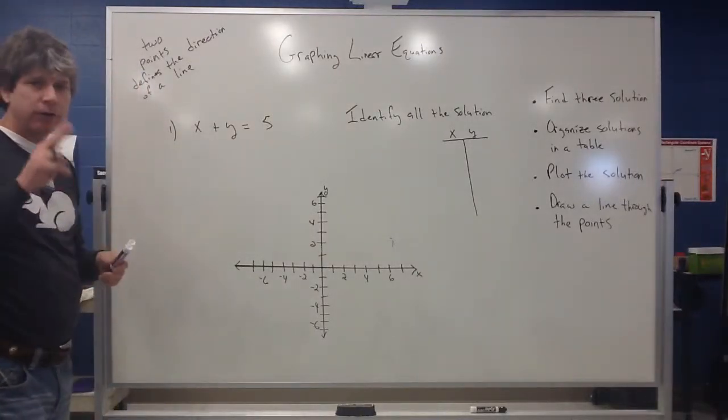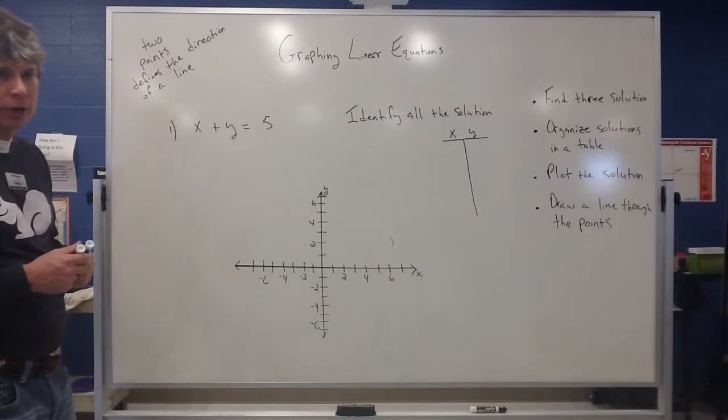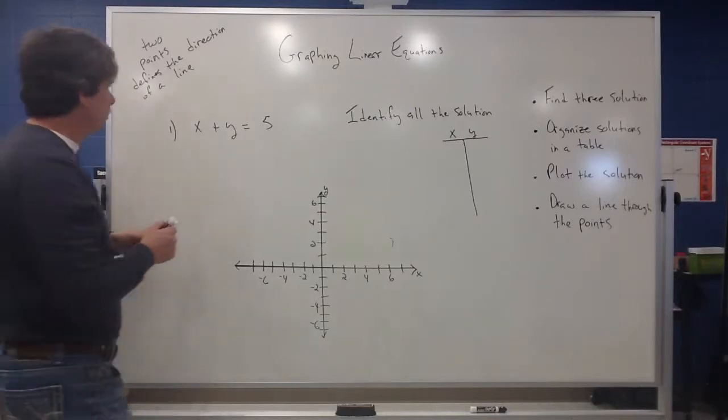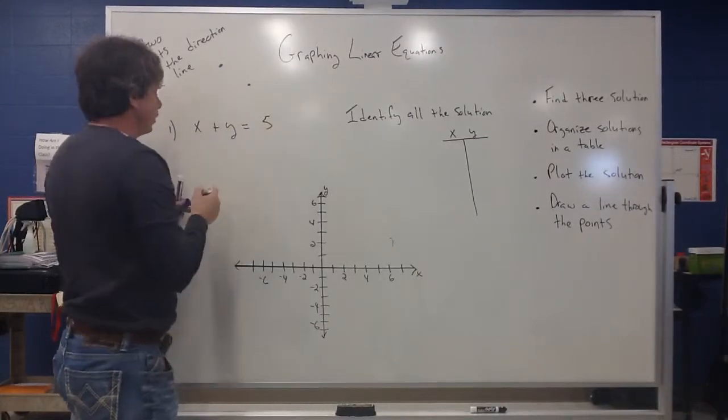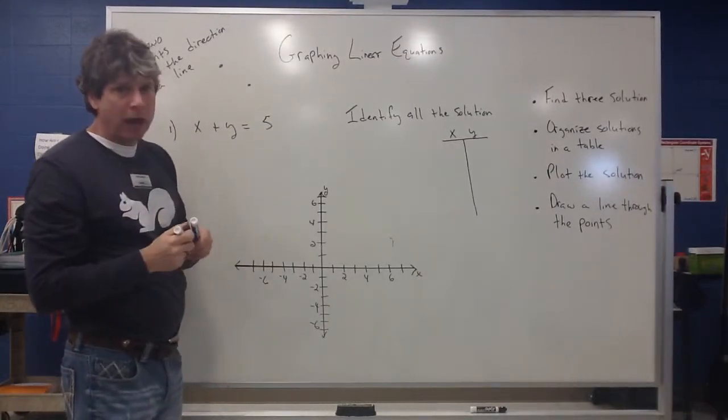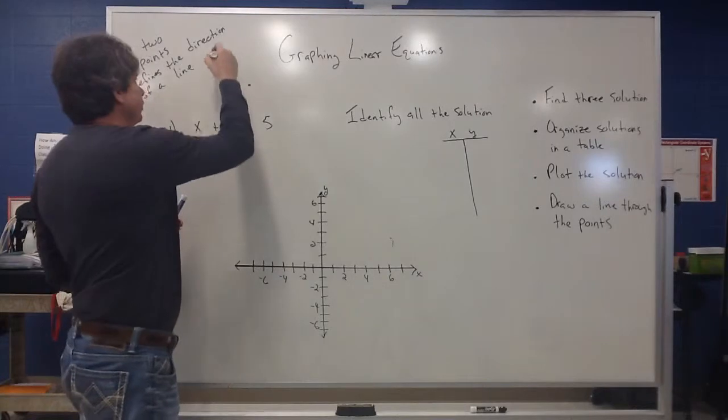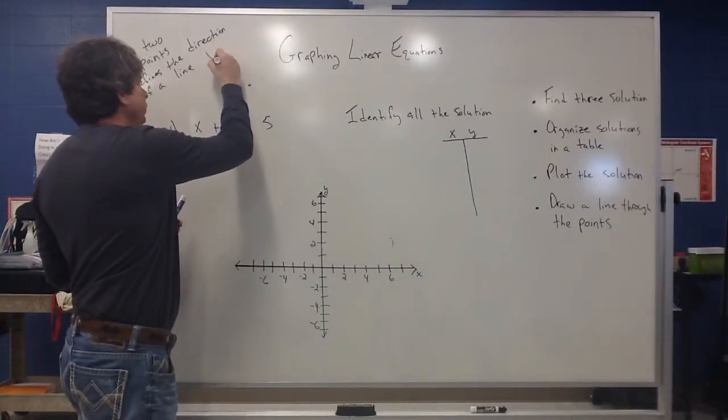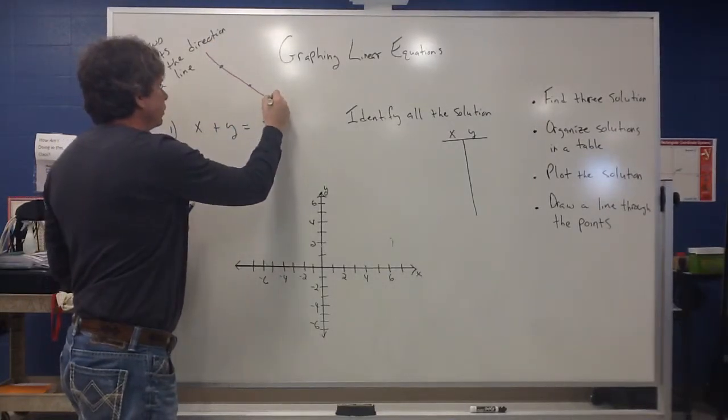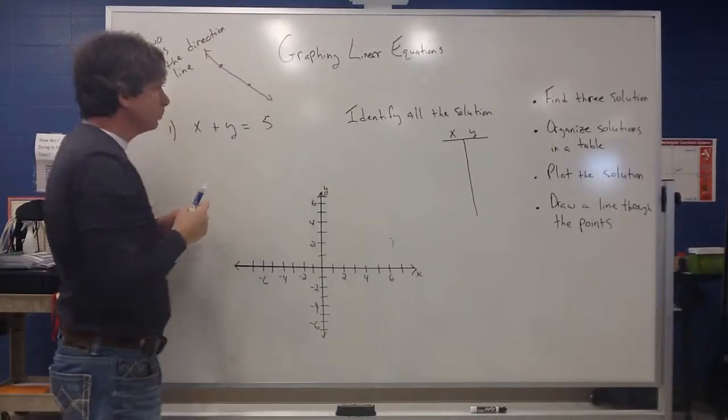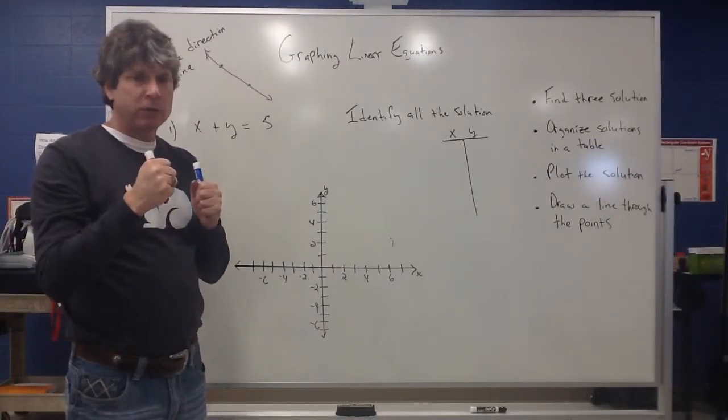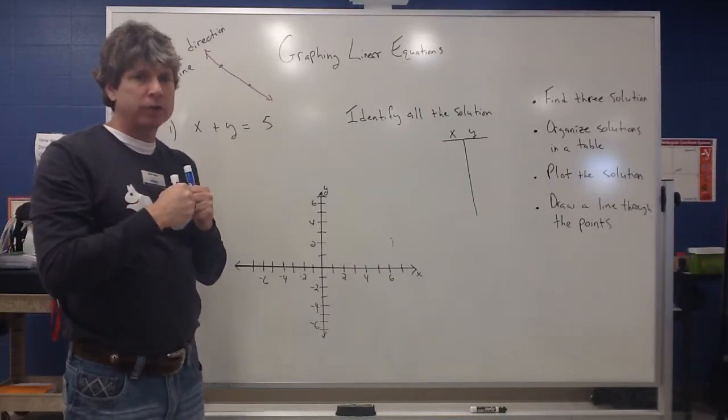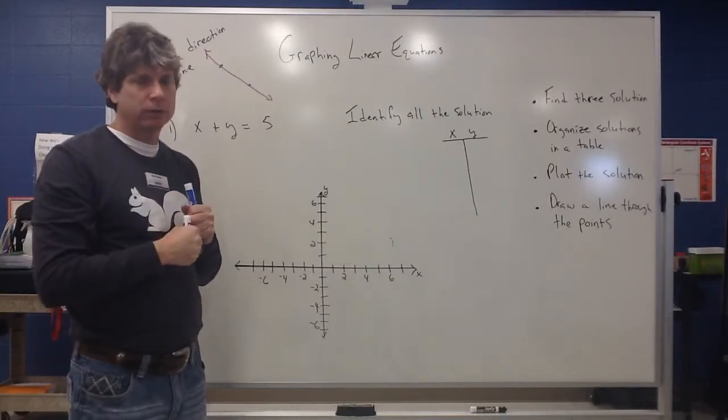it takes two points to actually create the direction of a line. So if I put a point here and a point here, notice that I can only draw one line through those two particular points. So that's going to be a unique line. So if I want to create a unique line, I need two specific points. And then if there's only one way to draw that line through those two points, it's going to be unique.